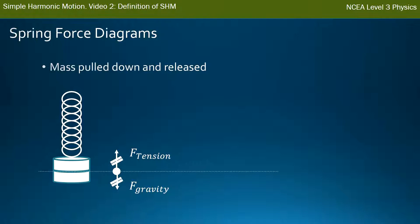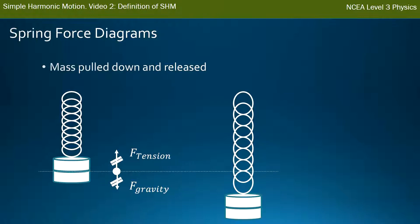Now assume we take this mass and pull it down below the equilibrium point — marked with the dashed line — and release it, so it starts bouncing up and down. At the instant it's been released, the hand is no longer touching it. Gravity would be unchanged, but the tension force would be larger because the spring has been stretched out — it's under more tension. The total force is therefore upwards, shown here with a double arrowhead.